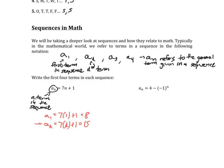For the third term: 7 times 3 plus 1 equals 22. For the fourth term: 7 times 4 plus 1 equals 29. The notation on the left — a sub 1, a sub 2, a sub 3, a sub 4 — tells the reader which term you're finding, and the calculation on the right tells how you computed it.